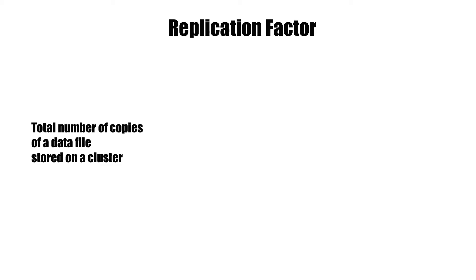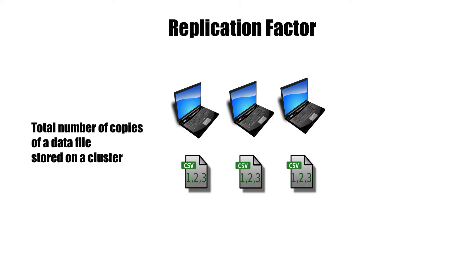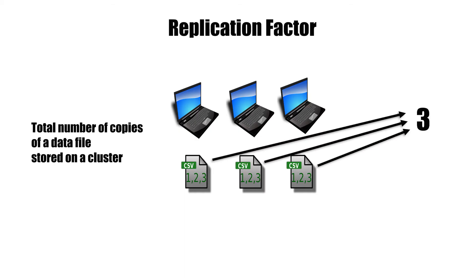Replication factor is a measure of the number of copies we are storing of every data file. Simply put, the replication factor is the total number of copies of a data file stored on a cluster. For example, if we have a data file and three machines in our cluster, and we store it on one node plus make two more copies, the total number of copies is three — and that becomes the replication factor of this cluster.